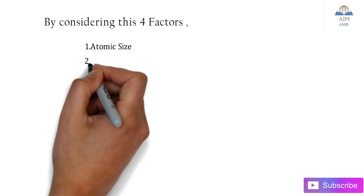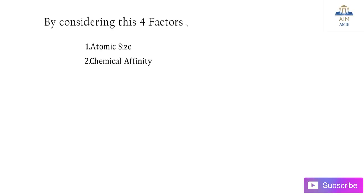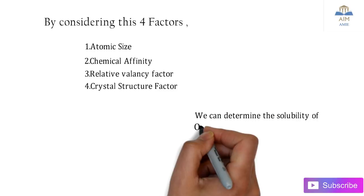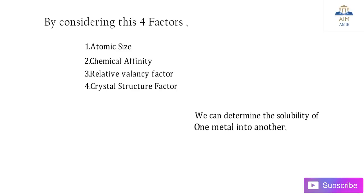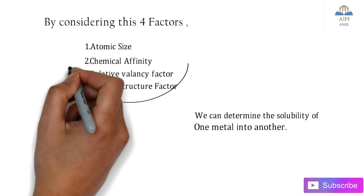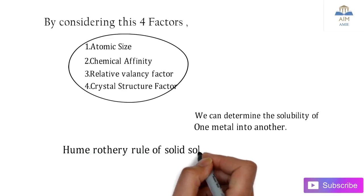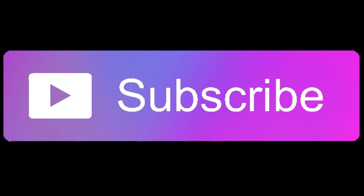We have seen four factors: atomic size factor, chemical affinity factor, relative valency factor, and crystal structure factor. We can determine the solubility by considering all these factors for the solubility of one metal into another. These four factors combining are known as the Hume-Rothery rules of solid solubility. I hope you understand this. Thank you for watching my video. Please do subscribe.